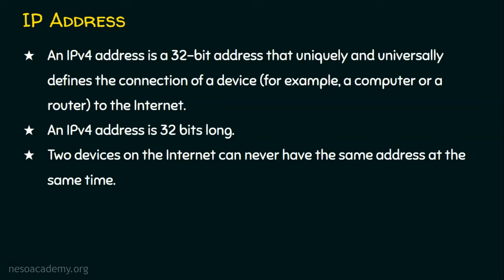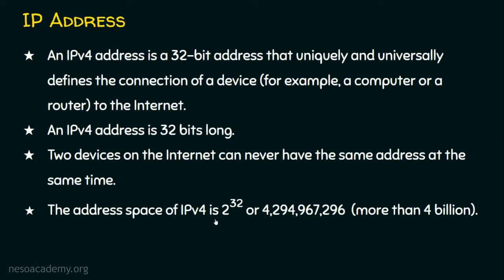What about the address space of IPv4? The address space of IPv4 is 2 to the power of 32. Why? Because an IP address is 32 bits long. So 2 to the power of 32 means we can have more than 4 billion IPv4 addresses. But in reality we have billions and billions of devices. Can we assign a unique IPv4 address to all those devices? The answer is also NAT technology — Network Address Translation — which we will be covering in the coming lectures.